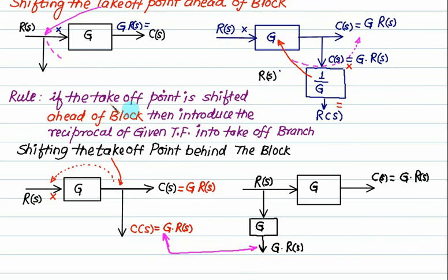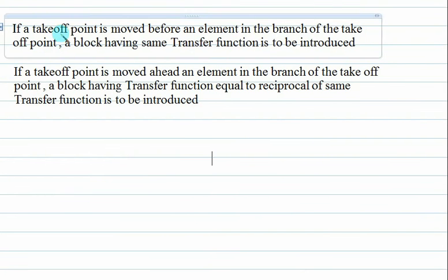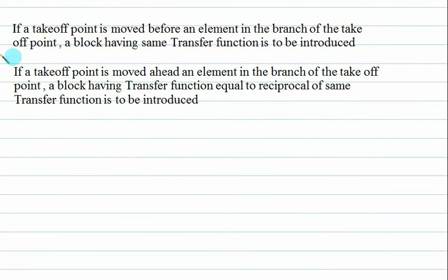So what is the rule? If the takeoff point is shifted behind the block, then introduce the same transfer function — not the reciprocal, but the same. We have to introduce the same transfer function. The final rules: if you are shifting the takeoff point before the block, then introduce the same. That is the keyword. And if you are moving ahead, then introduce the reciprocal.